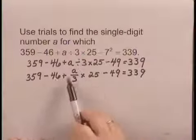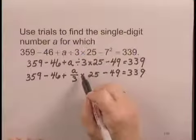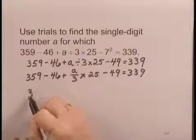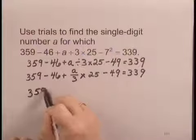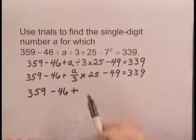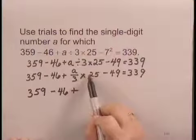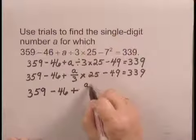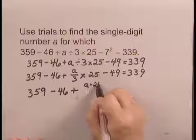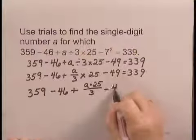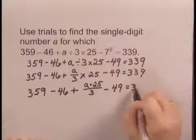Looking through here, I have an operation of multiplication. So that's the next operation I'll do. Copying, I have 359 minus 46 plus, and now I have A over 3 times 25. That will give me A times 25 over 3 minus 49 equals 339.